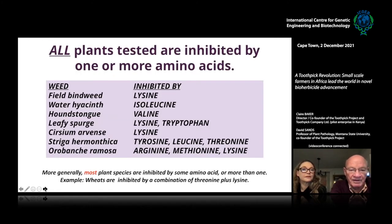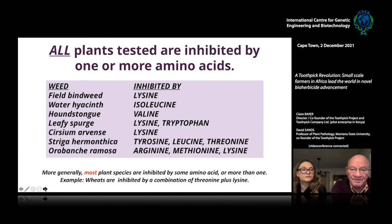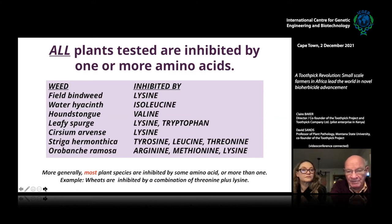Field bindweed, water hyacinth, and houndstongue are all inhibited by certain amino acids. Once you know which amino acid inhibits a weed, you're halfway there — you just get the fungus to make it. Getting fungi to make amino acids is a different technical specialty, but it can be done. In fact, lysine, valine, and methionine are available at a dollar a pound in animal feeds — people have learned how to get microbes to make these.